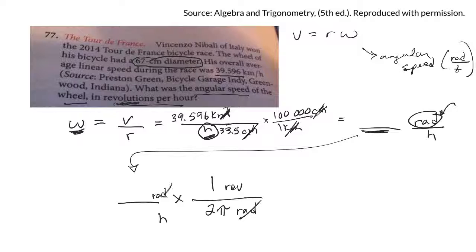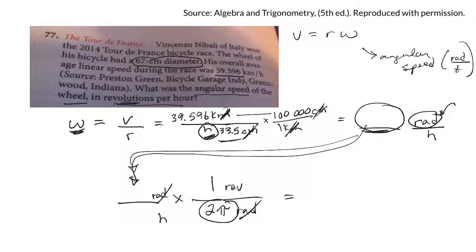So if I multiply these two and divide by that, that'll give me my angular speed in radians per hour. Then if I take that number and divide it by two pi, then my answer is going to be revolutions per hour.